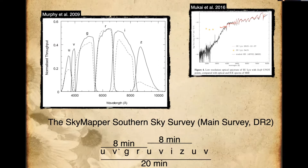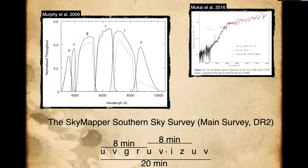There's also time-domain information in the SkyMapper survey. Every time SkyMapper hits a field, it observes a filter sequence in the space of 20 minutes: U-V-G-R-U-V-I-Z-U-V. So there are three exposures in the u-band, the bluest band, separated by eight minutes each. It's only three data points, but we were hopeful we could select for accretion disk flickering and find new symbiotic stars that are accreting only, without nuclear burning.